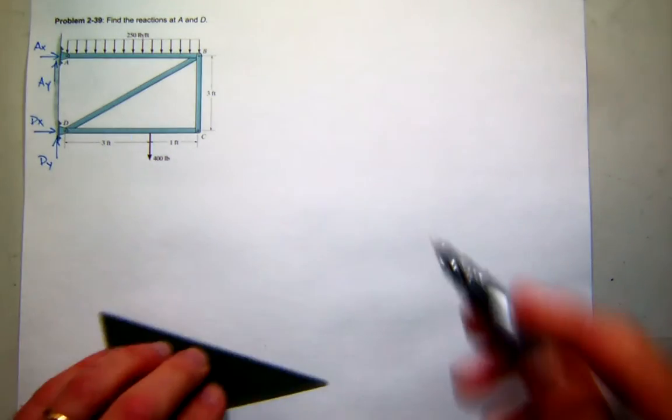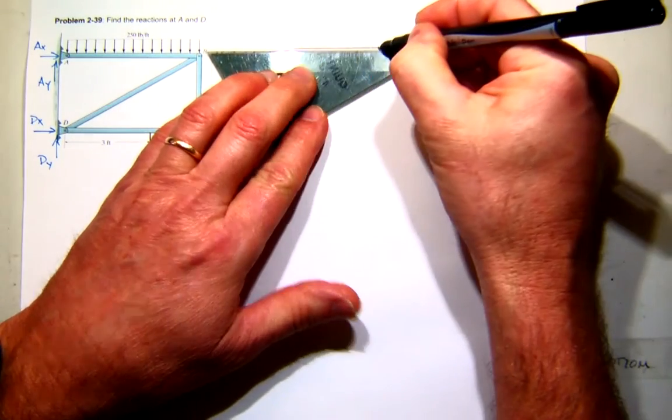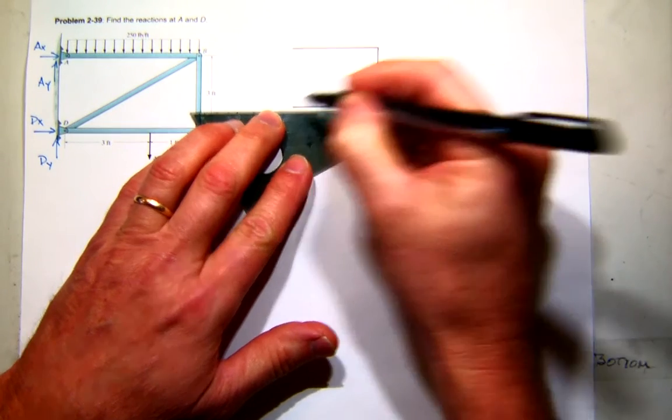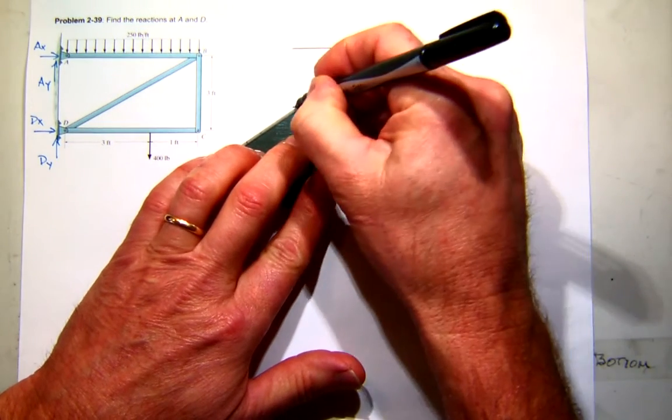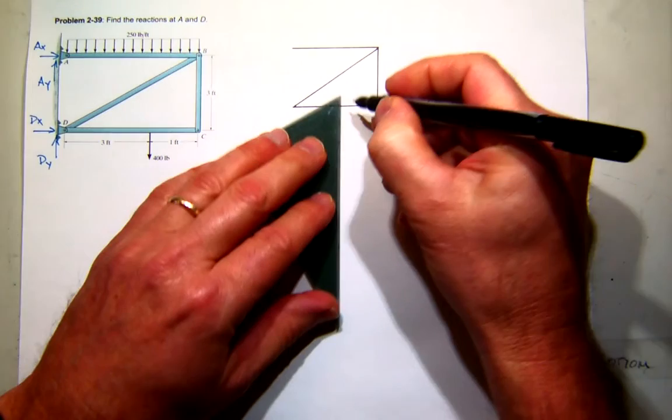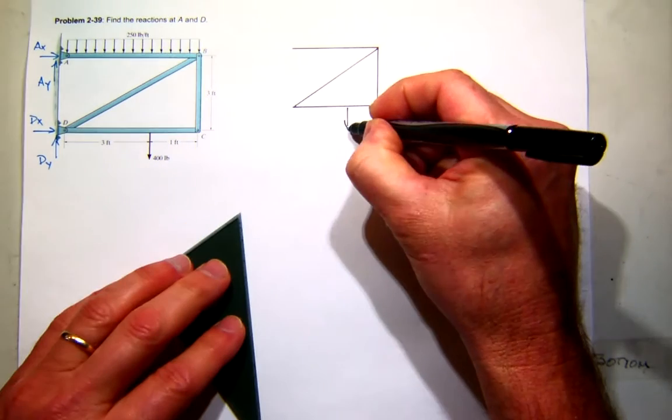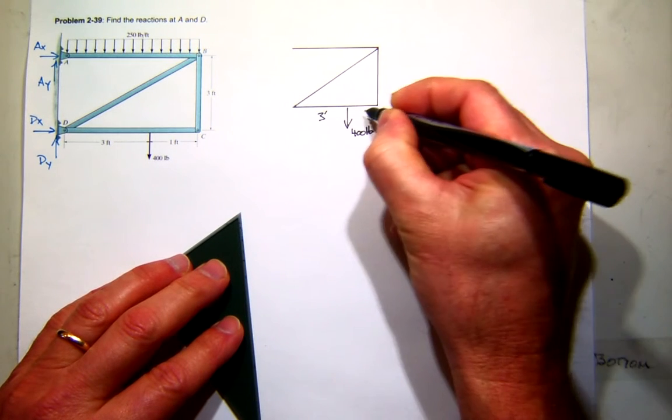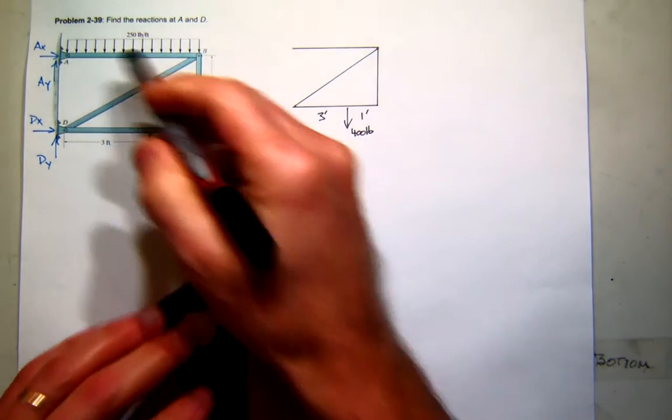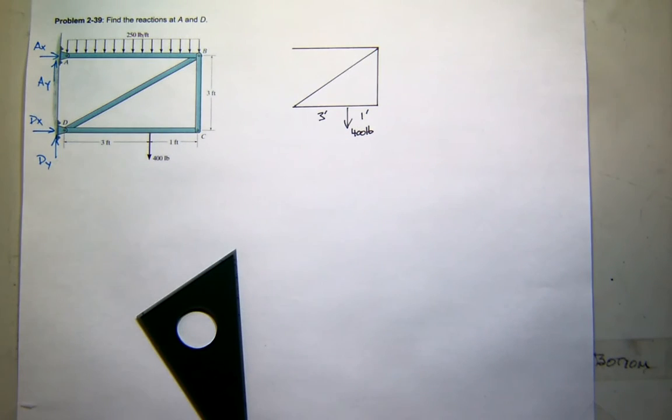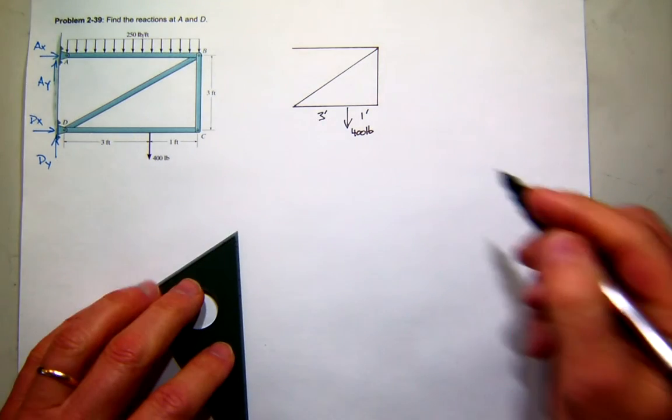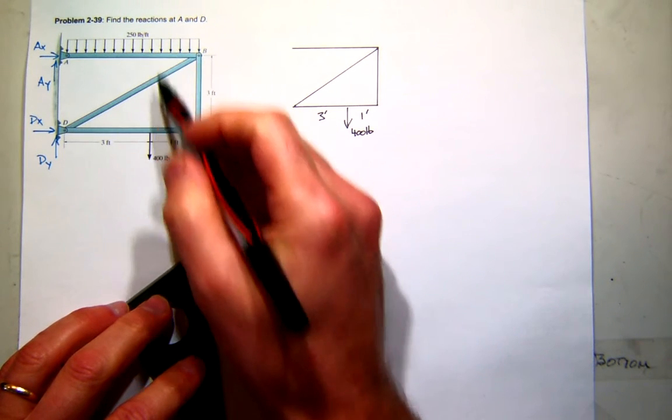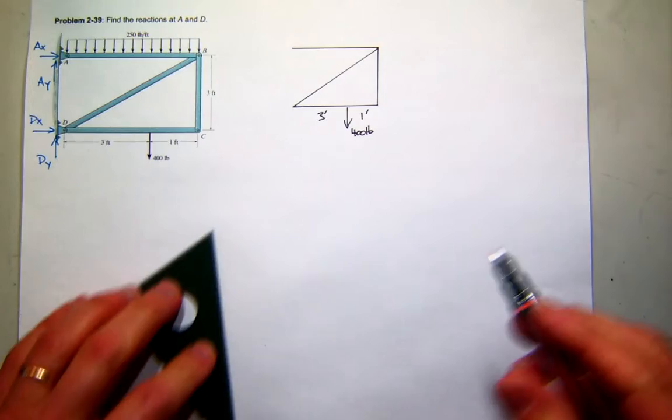So let me draw a free body diagram of the whole structure. I don't really care too much about all these bits and pieces because I'm not going to take anything apart. I do know I have a 400 pound force here, and that's at three feet and one foot. I'm going to replace the distributed load by a concentrated equivalent force. The area of that curve, it's a rectangle, so base times height. The base is four, the height is 250, so that's 1,000.